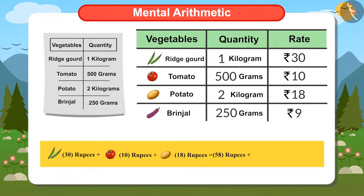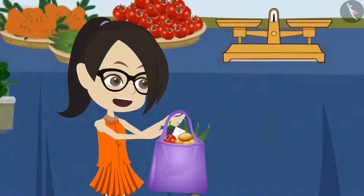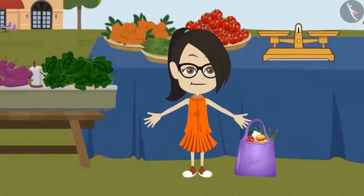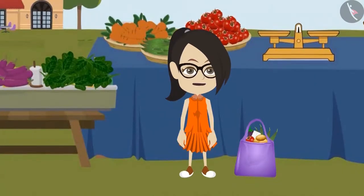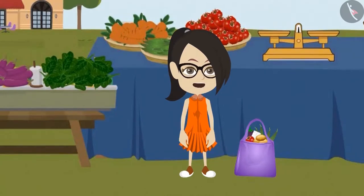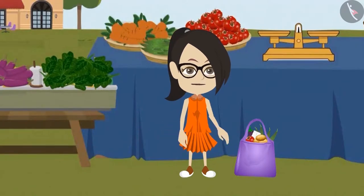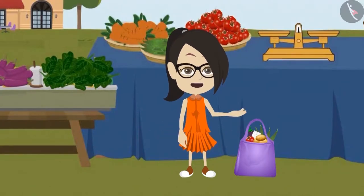Now I will add 9 rupees to 58 rupees. The answer will be 67 rupees. This means all these vegetables are worth 67 rupees. I too calculated the total price of all vegetables without a paper and a pen. Now I understand how remembering multiplication tables and knowing multiplication and division make calculations easier.